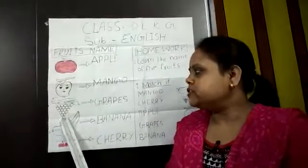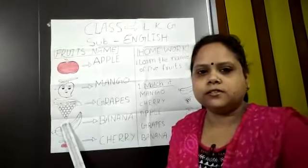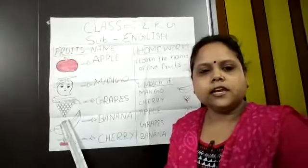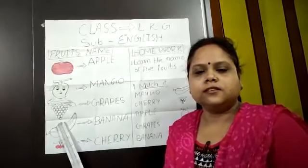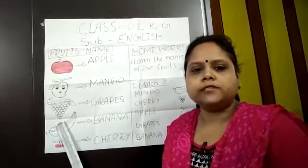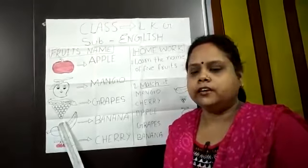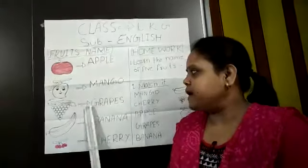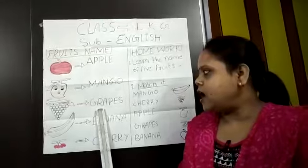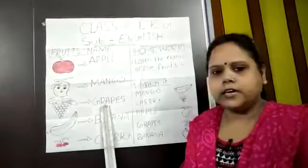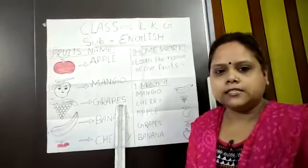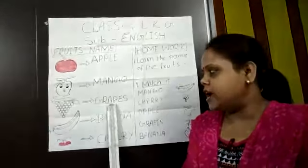Next is Grapes. What is the color of Grapes? The color of Grapes is green, and the spelling is G-R-A-P-E-S. Grapes.